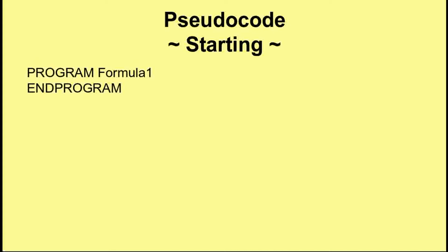A pseudocode program starts with the word 'program' followed by the name of the program. So in this case, it's 'Program Formula 1'. And then you have 'End Program'. Whatever happens between Program and End Program, that's your code.